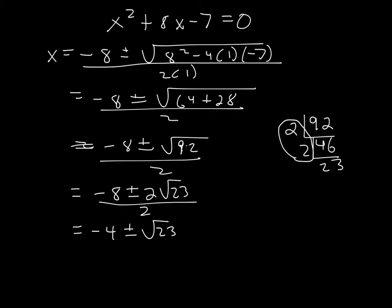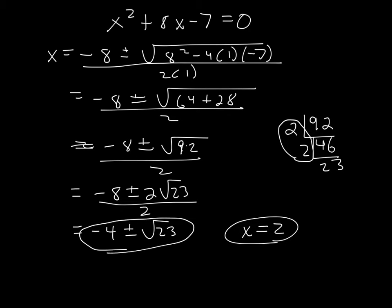To summarize Example 1: we had x=2 from synthetic division, and x = −4+√23 and x = −4−√23 from the quadratic formula. That's three answers for a third-power polynomial — exactly what we expected.